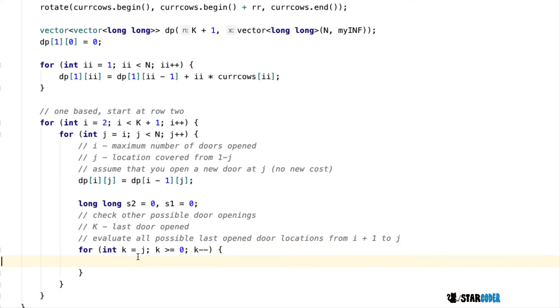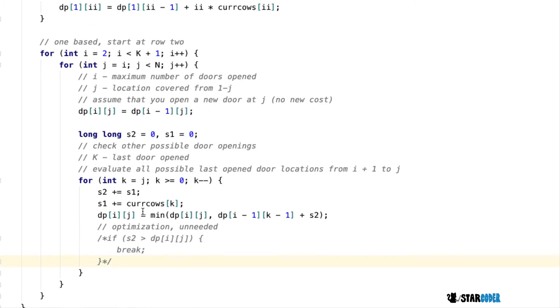We have K, which is the location of the last door. We loop through K and evaluate all possible locations for the last door opened. Here we calculate the cost using our prefix sums.